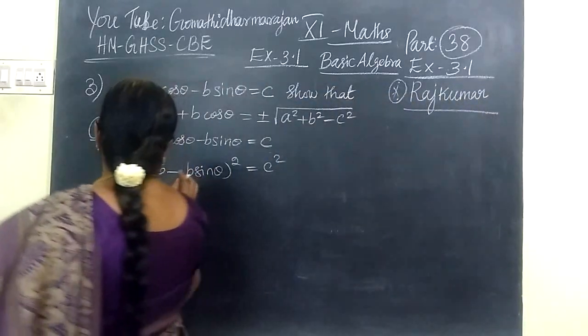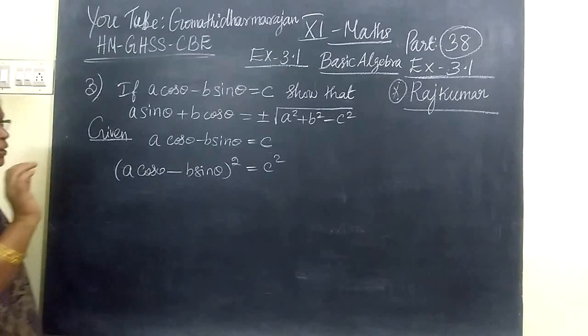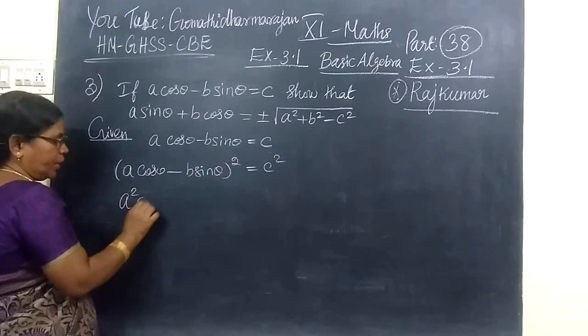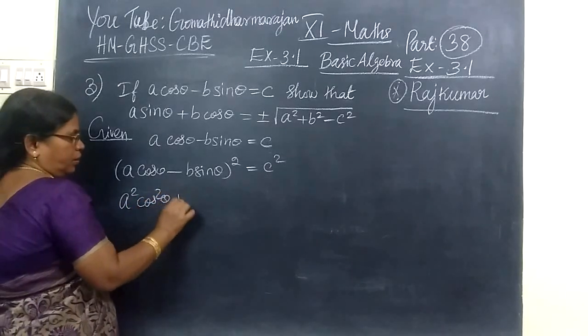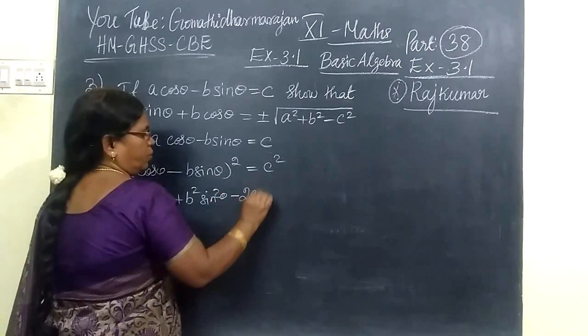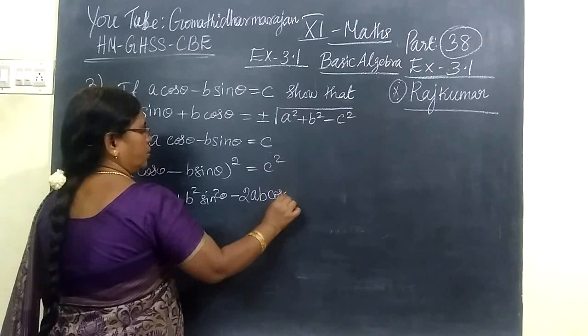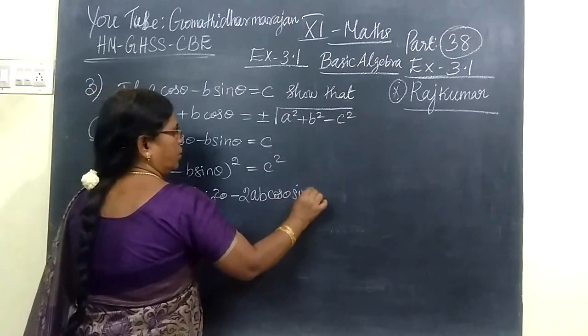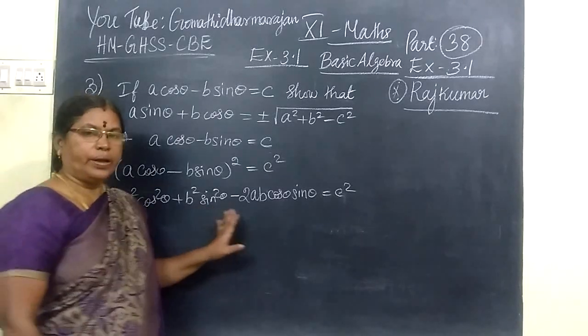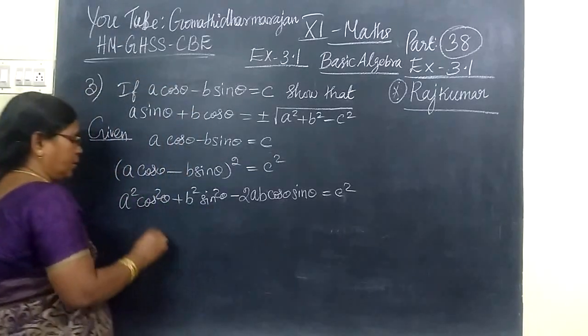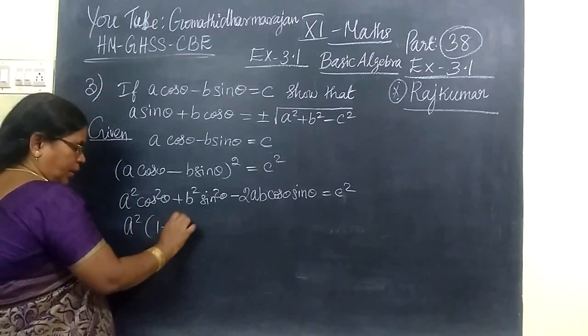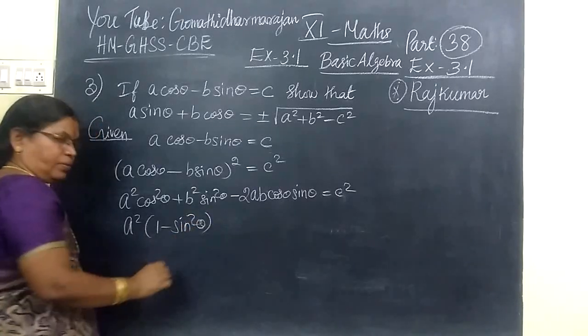Now we write A cos theta minus B sin theta whole square equals C square. A square cos square theta plus B square sin square theta minus 2AB cos theta sin theta equals C square. Let's write A square plus B square minus 2AB. This cos square theta you write it as 1 minus sin square theta, very simple problem.